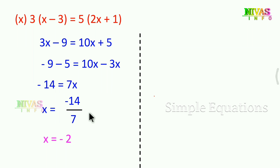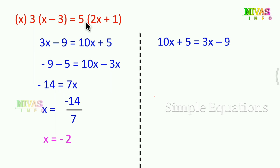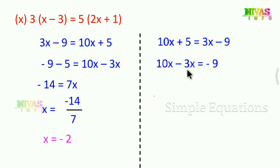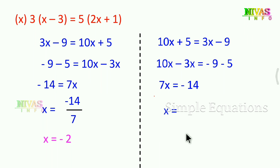To clarify the last problem: 5 into 2x gives 10x, plus 5 into 1 gives 5, so left side is 10x plus 5. Right side: 3 into x gives 3x, 3 into 3 gives minus 9, so right side is 3x minus 9. Rearranging: 10x minus 3x equals minus 9 minus 5, giving 7x equals minus 14. Dividing: x equals minus 14 by 7, so answer is minus 2.